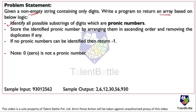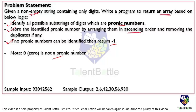We have to identify all the possible substrings of digits which are pronic numbers. Then store the identified pronic numbers by arranging them in ascending order and removing duplicates if any. If no pronic numbers can be identified, return minus one or an empty array. Note: zero is not considered as a pronic number. We will first understand the logic and then move to the actual code execution.